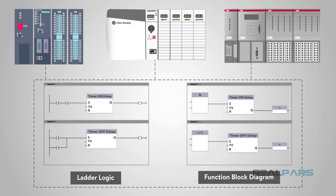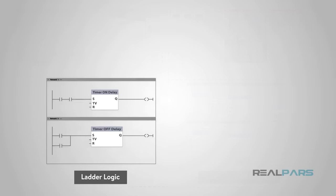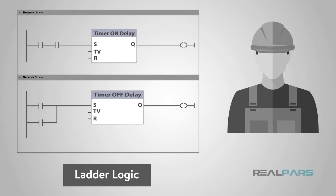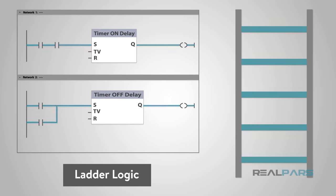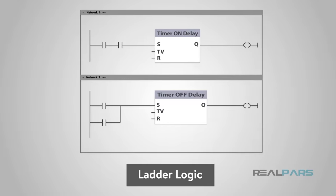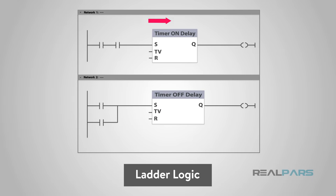Ladder logic is pretty well the universal programming language of PLCs. It has been around for decades and is pretty well understood by most technicians and engineers alike. It is named ladder logic because it quite literally looks like a ladder. The vertical lines are referred to as the power rails. The horizontal lines that our programming bits are located on are rungs, just like on a ladder. It is read from top to bottom and left to right.